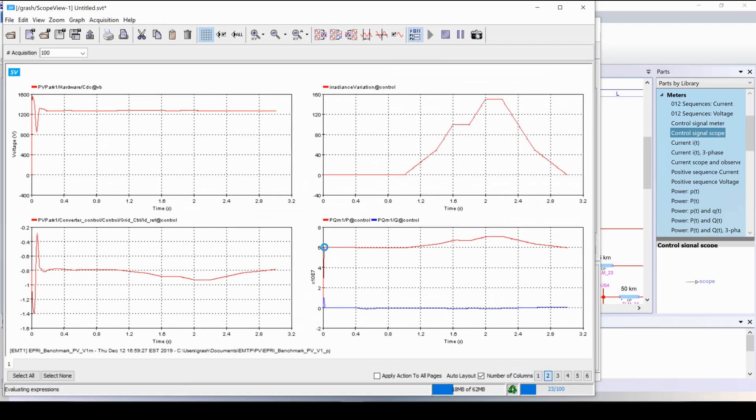As we can see, initially the park produced the same active power as during load flow, 60 megawatts. We can also see that the initialization is perfectly done. At this point, one second, the irradiance is varied. And we can see the active power of the park is varied as well. We can see that here in zooming,